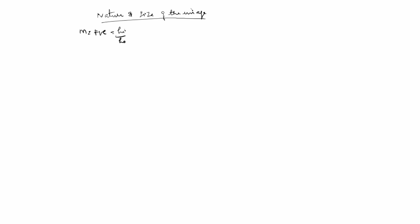Now we will see nature and size of the image. If m is equal to positive — meaning m equals hi by ho equals minus v by u is positive — that means the image is virtual and erect (upright). In this case hi and ho have the same sign: if hi is plus then ho is also plus, if hi is minus then ho is also minus.